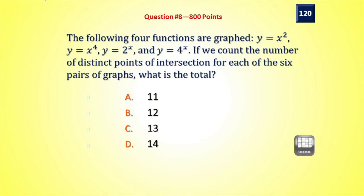The following four functions are graphed: y equals x squared, y equals x to the fourth, y equals 2 to the x, and y equals 4 to the x. If we count the number of distinct points of intersection for each of the six pairs of graphs, what is the total? We count the number of points for each pair and add up the total. Are there 11 such points, 12, 13, or 14?